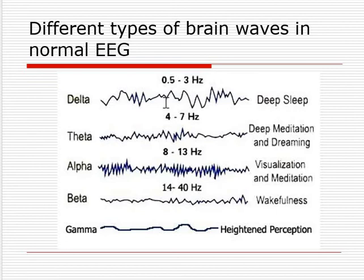Alpha is 8 to 13 Hz and is associated with visualization and meditation. Beta is 14 to 40 Hz and represents wakefulness — when we are thinking and fully awake. If you look at delta, theta, and alpha, all three resemble states where we are physically present but mentally drifting. Beta represents the fully awake, alert, and aware condition.